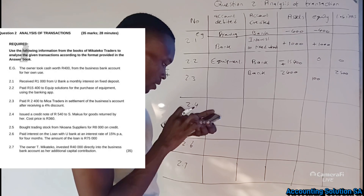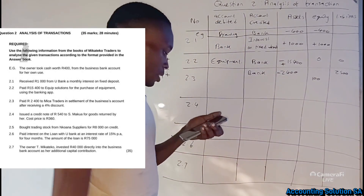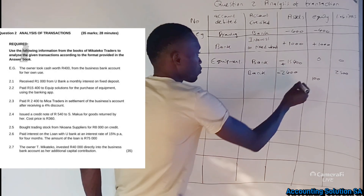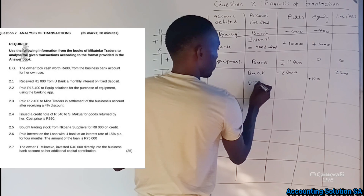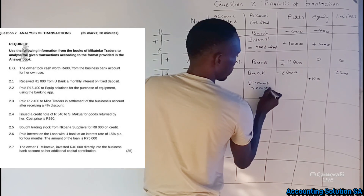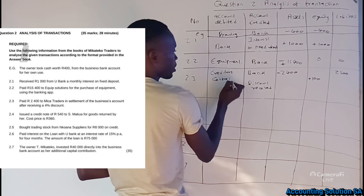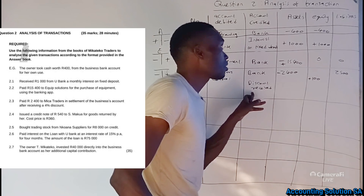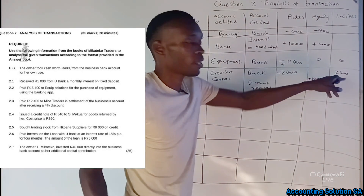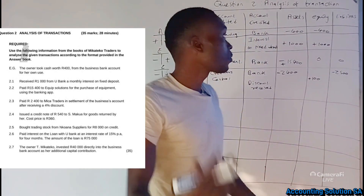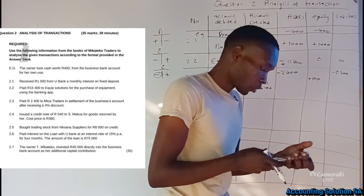We paid R2,400 — that is the money going out of the business. The 4% discount of R100 is income to us because we did not pay it, so we record Discount Received. Discount Received is income and falls under equity — it is a plus. Creditors Control is R2,500 as a minus because we reduce liability on the debit side.